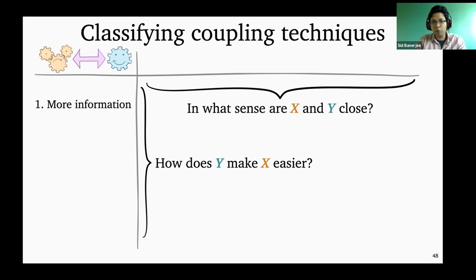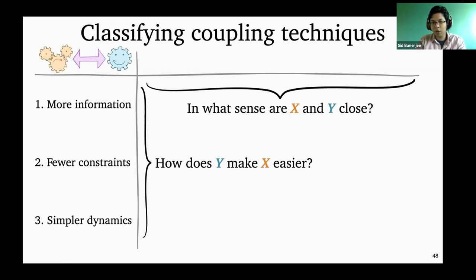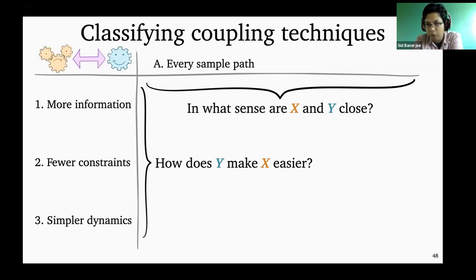In terms of how we chose easier systems: first, what if we had more information — what if y knew more about the future than x? Or what if it had fewer constraints than x? Or what if it had simpler dynamics? On the other axis, in many cases we know systems x and y completely — we can describe what the sample paths are — and then we can follow these two systems along each sample path and compare them.